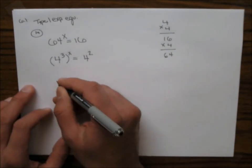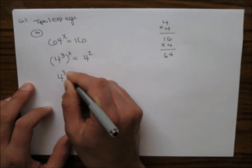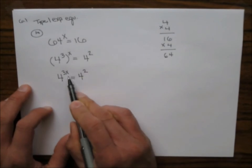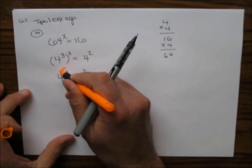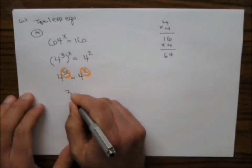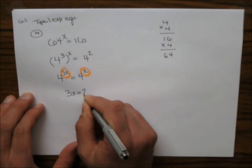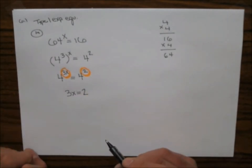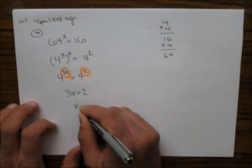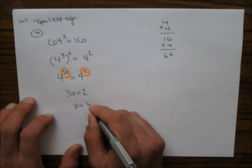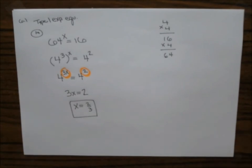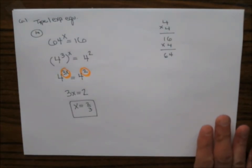6.1 type one exponential equations. To solve this, get a common base. We observe that 64 is 4 cubed and 16 is 4 squared. Using base 4: a power to a power means we multiply exponents. Setting the exponents equal gives x equals 2/3.